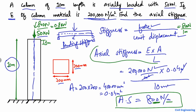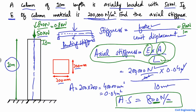Axial stiffness depends on three important factors: the elasticity of the material, the area of the cross section, and the length of the column. The longer the length, the lower the axial stiffness, because length is inversely proportional. Increasing elasticity or cross-sectional area increases axial stiffness, as they are directly proportional.